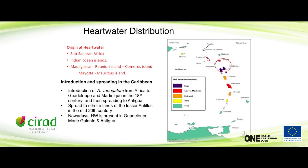The origin of heartwater is Sub-Saharan Africa and some Indian Ocean islands like Madagascar, Reunion, and Comoros. For the Caribbean regions, it was introduced in the 18th century and then spread to Antigua. There was also introduction of the ticks to other parts of the Antilles and Caribbean regions. But now heartwater is only present in Guadeloupe, Marie-Galante island connected to Guadeloupe, and Antigua.